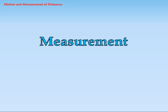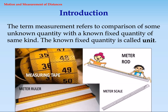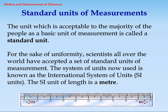Measurement: The term measurement refers to comparison of some unknown quantity with a known fixed quantity of the same kind. The known fixed quantity is called a unit. Standard units of measurement: The unit which is acceptable to the majority of people as a basic unit of measurement is called a standard unit.